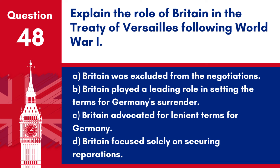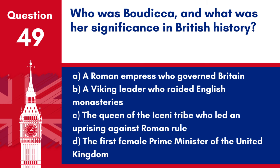Question 48. Explain the role of Britain in the Treaty of Versailles following World War I. a. Britain was excluded from the negotiations. b. Britain played a leading role in setting the terms for Germany's surrender. c. Britain advocated for lenient terms for Germany. d. Britain focused solely on securing reparations. Answer: b. Britain, along with France and the United States, played a leading role in the Treaty of Versailles negotiations, setting the terms that ended World War I and imposed penalties on Germany.